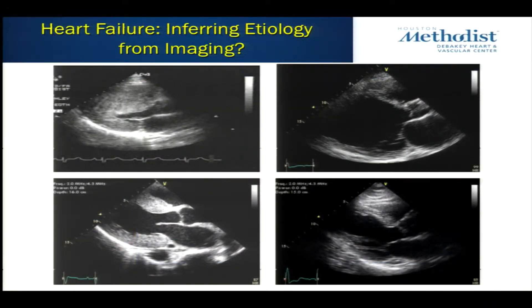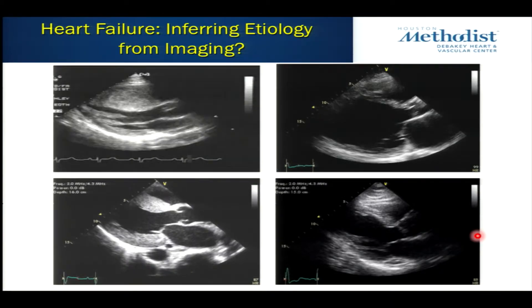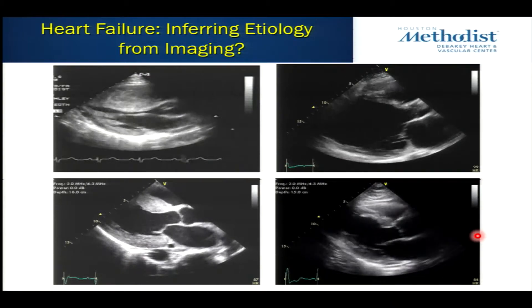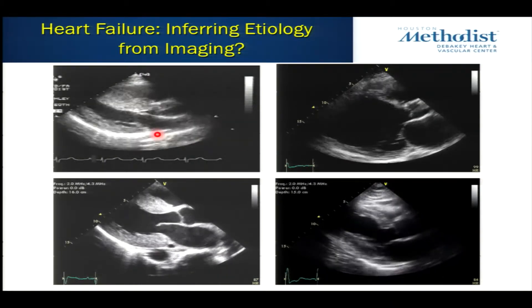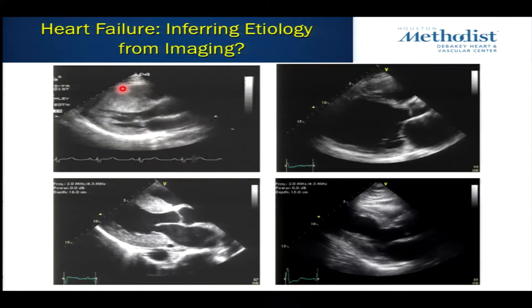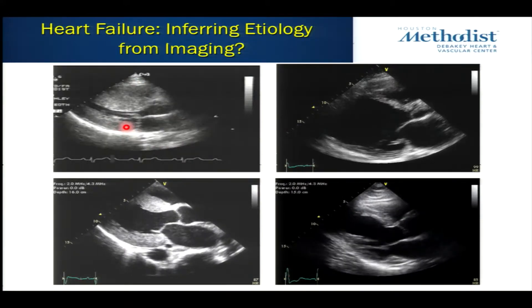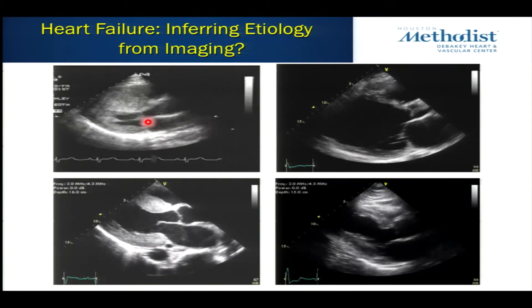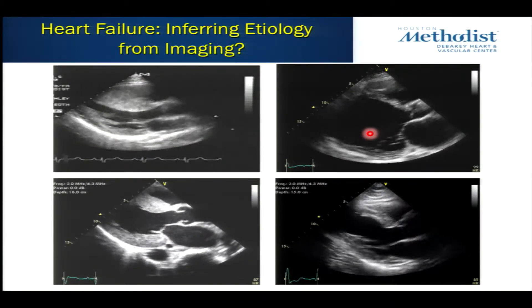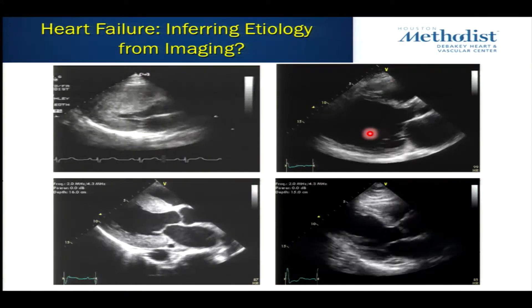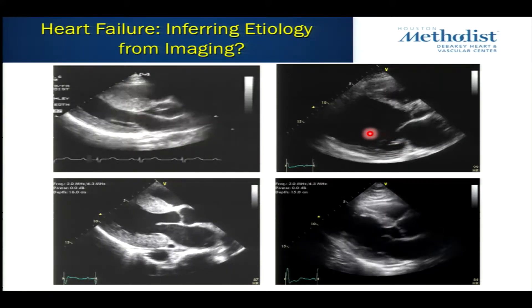In patients with heart failure, an echocardiogram can help you in many ways. You can look at the heart itself and infer the underlying etiology. On this image is a hypertrophic cardiomyopathy — see how thick this septum is, and you have this SAM, which is obstruction, dynamic obstruction. All these patients have shortness of breath, but imaging can help you hone down what the underlying problem is.